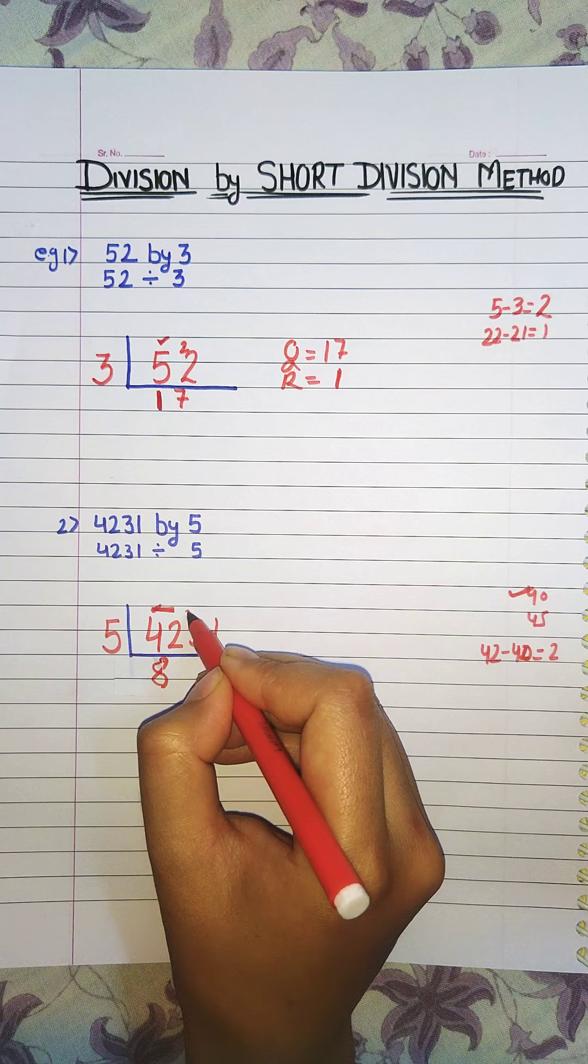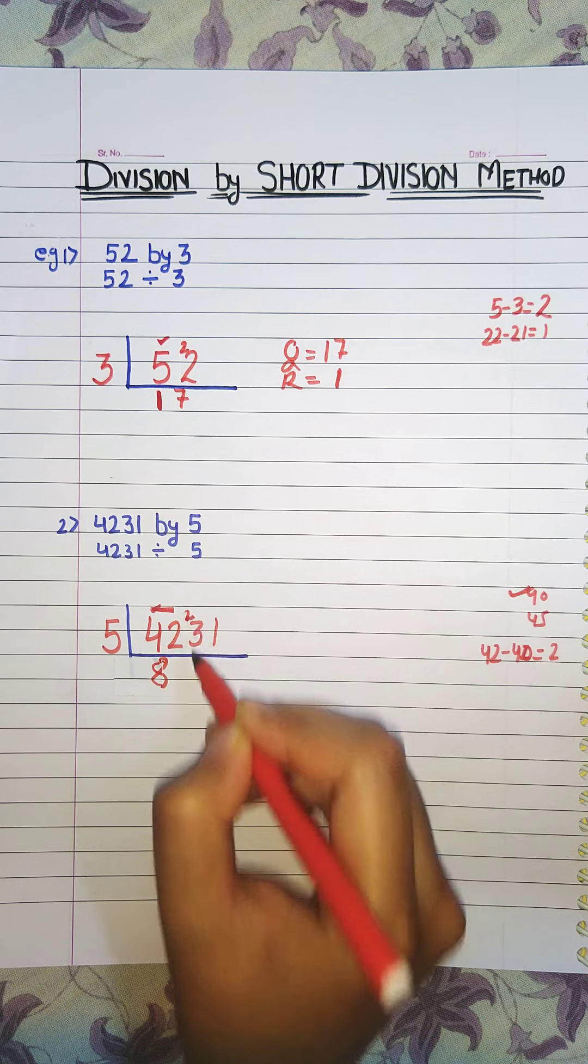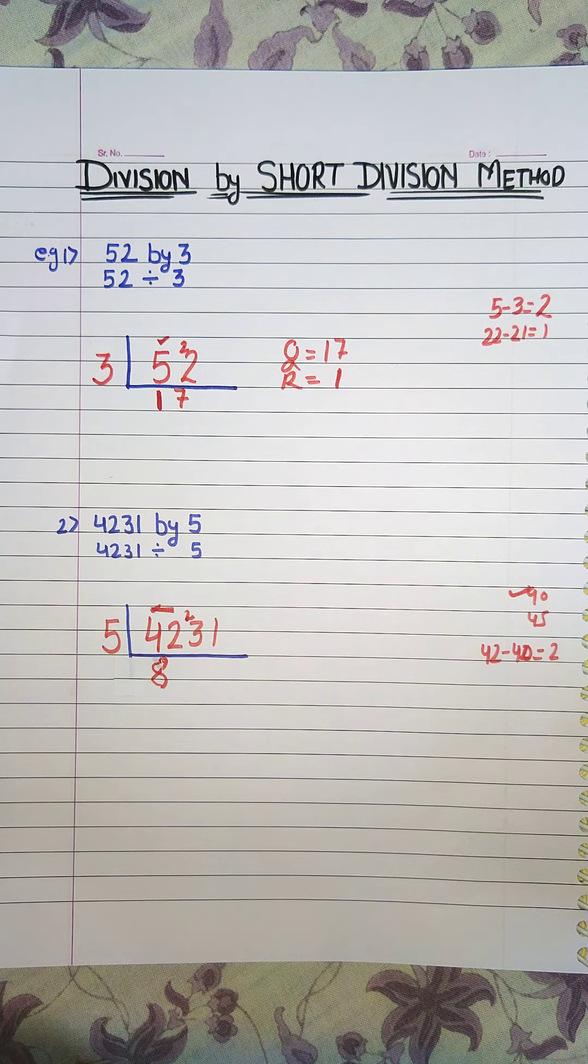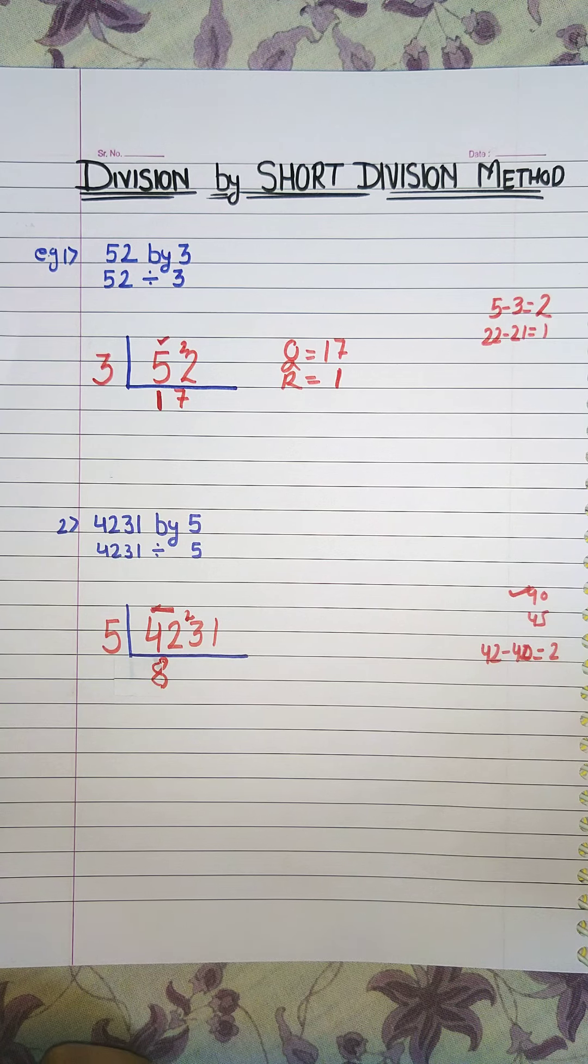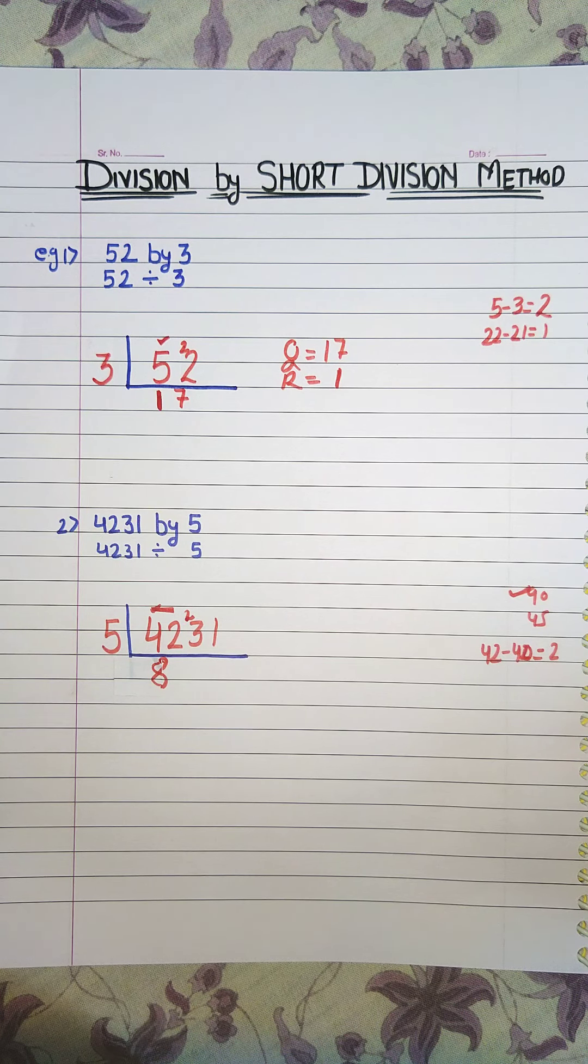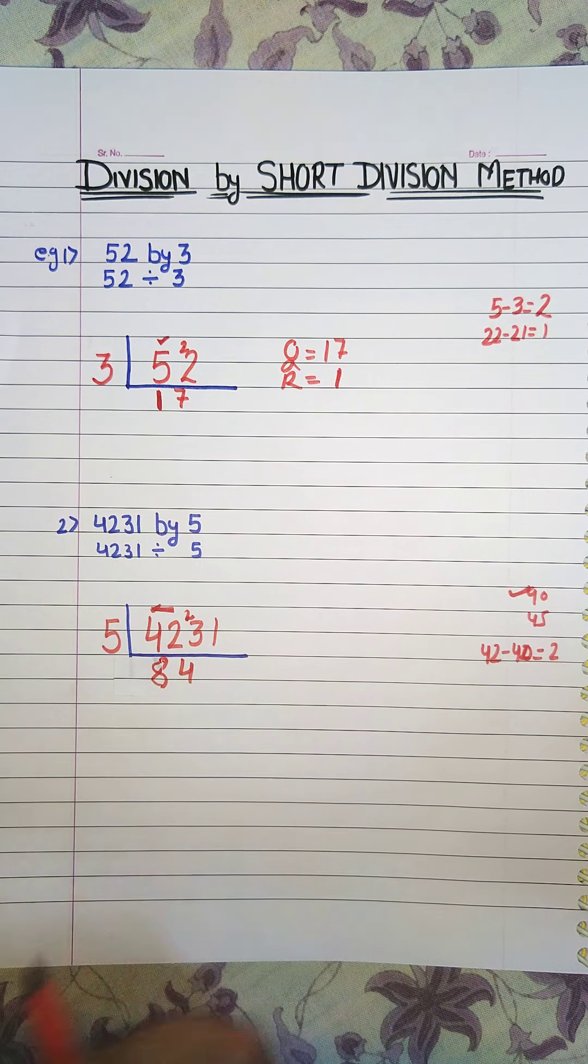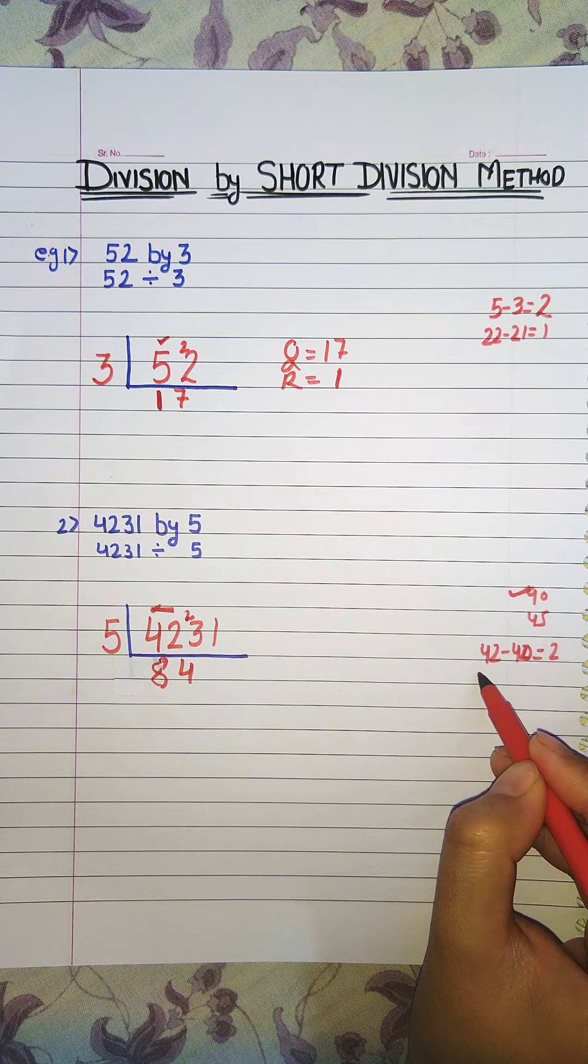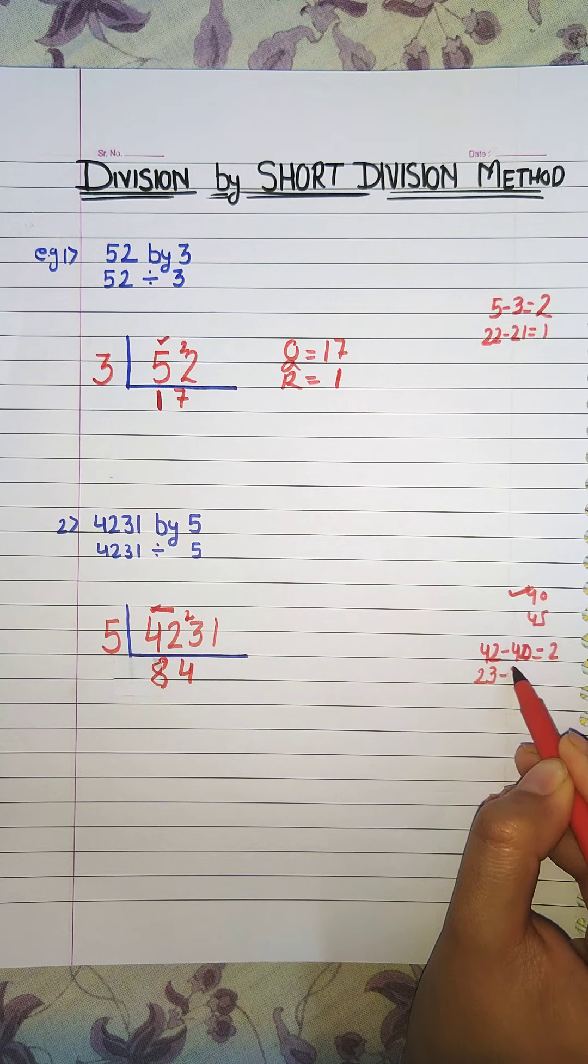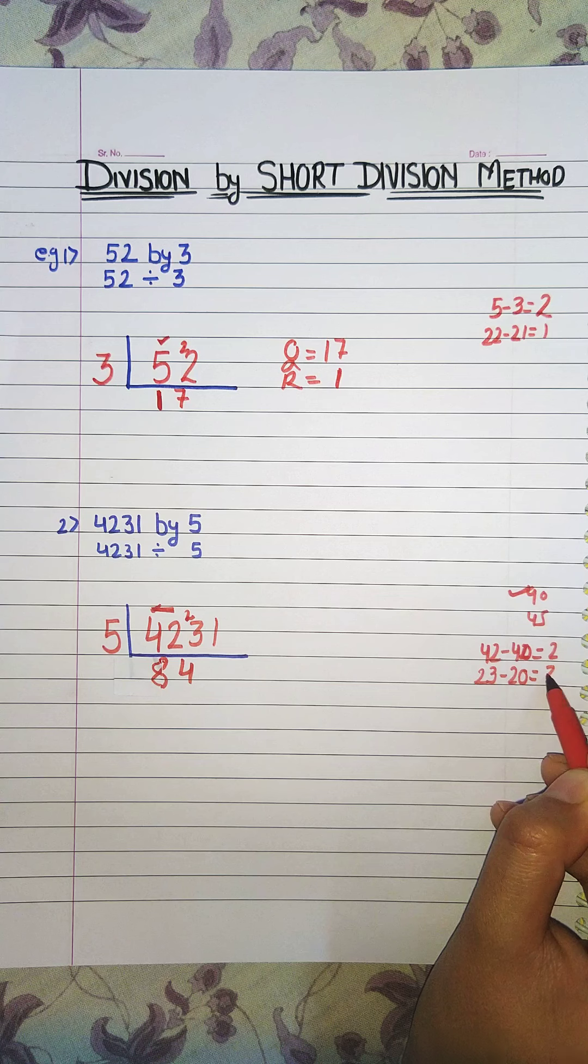So 5 eights are 40 and in the mind you will do 42 minus 40 that is 2 and 2 is carried to here and it becomes 23. Now table of 5 till we reach 23. So 5 fours are 20. In the mind you will do 23 minus 20 that is 3.